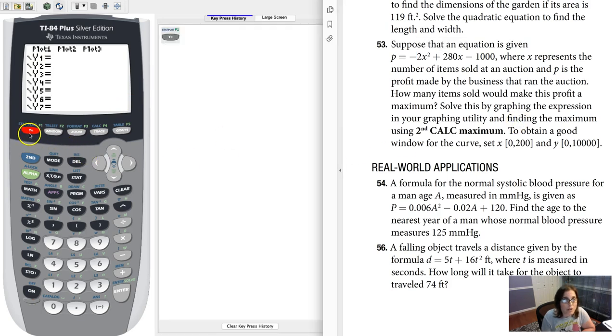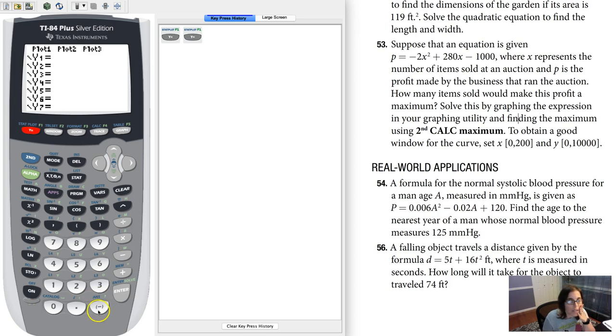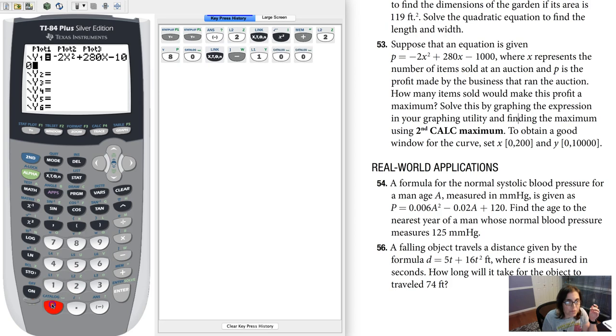So let's go into your y equals and type this equation in. We want to graph it, so negative 2x squared plus 280x, and then we have minus 1,000. Do we have enough zeros? Yeah, so we can hit zoom 6.